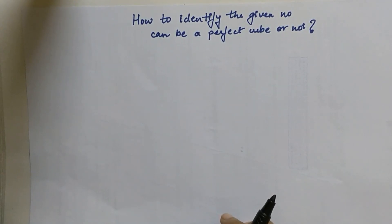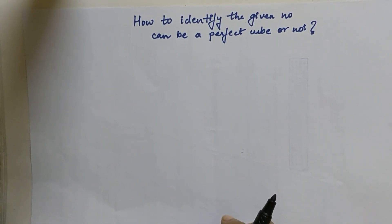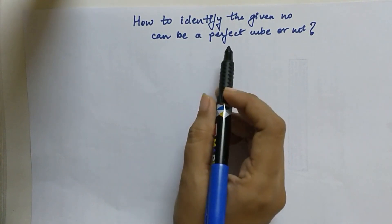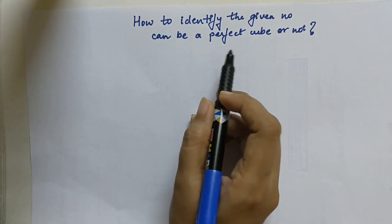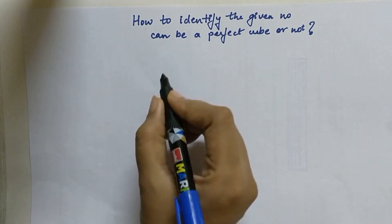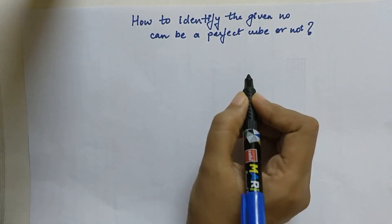Welcome students. In this video I'm going to show you a trick with which you can identify whether the given number can be a perfect cube or not. The basic and most traditional way of finding whether the given number is a cube or not is by finding its factors.